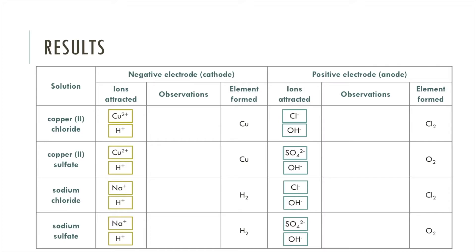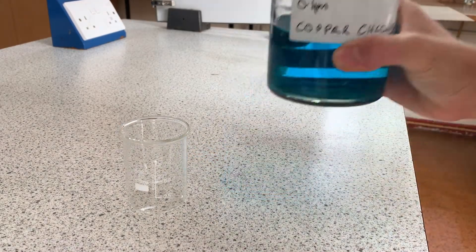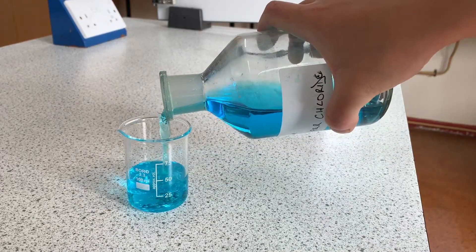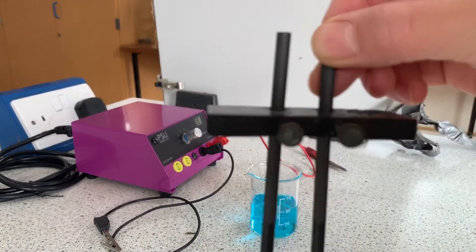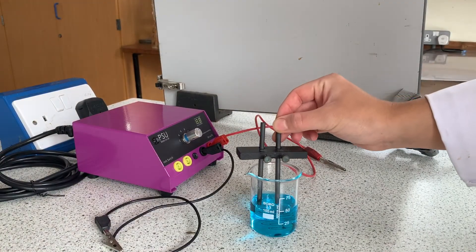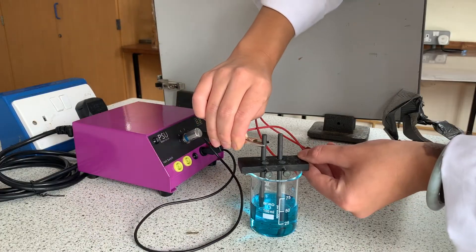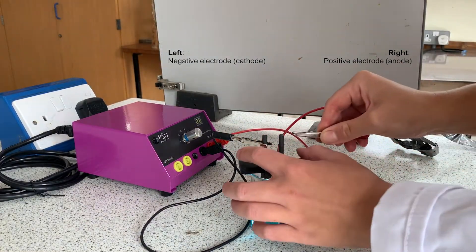So let's get started with the electrolysis of copper chloride. First of all you need to fill up a hundred milliliter beaker halfway with the electrolyte solution. Place in the electrodes and make sure they're not touching, and then you need to attach those to a power source. Now I've connected my circuit up so that the negative electrode is on the left and the positive electrode is on the right.